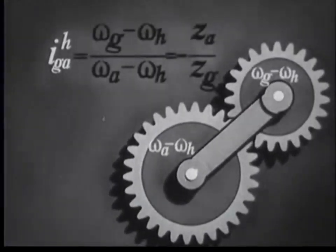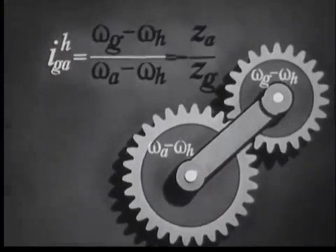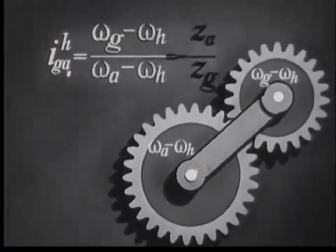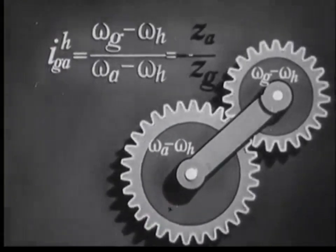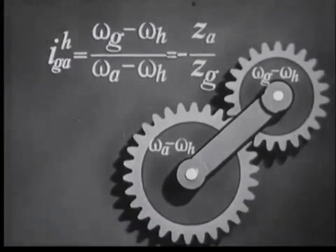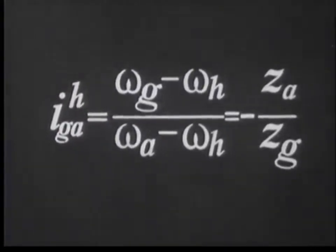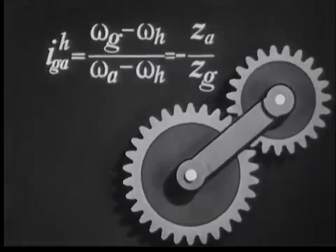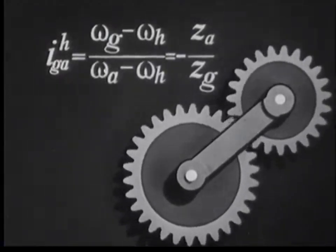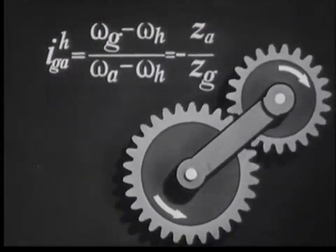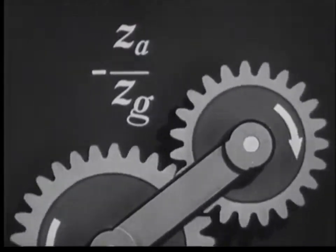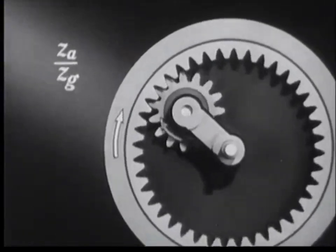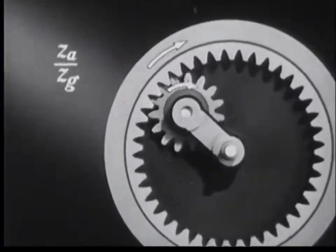The gear ratio from one wheel to the other with the suspended driver is the ratio of the angular velocities of the central wheels in reverse motion. It is inversely proportional to the number of teeth of these wheels. With external engagement, a minus sign is placed in front of the ratio of the numbers of teeth, indicating that the wheels rotate in opposite directions. With internal engagement, the wheels rotate in one direction and no minus sign is used.